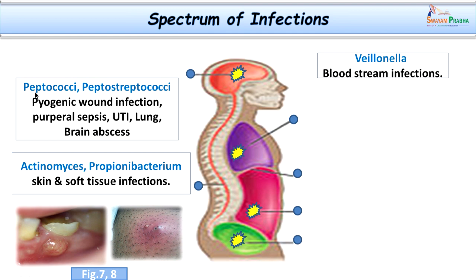Looking at the spectrum of infections: Gram positive cocci — Peptococcus and Peptostreptococcus — are involved in pyogenic wound infections, puerperal sepsis especially Peptococcus, urinary tract infections, lung infections, and brain abscesses. Other Gram positive bacilli — Actinomyces and Propionibacterium — are also involved in skin and soft tissue infections. On the Gram negative side, Veillonella, the Gram negative cocci, are involved in bloodstream infections.